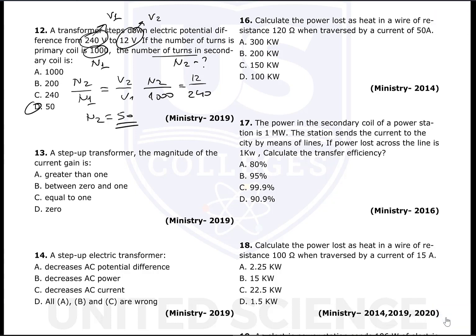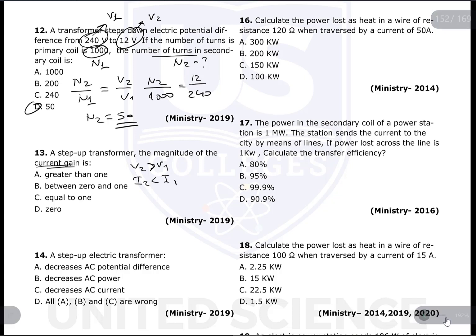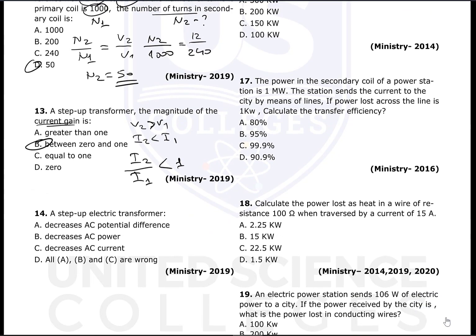Question 13: For a step-up transformer, V2 > V1. Since potential difference and electric current are inversely proportional, I2 < I1. The current gain is I2/I1, which in this case must be less than 1 — specifically between 0 and 1.